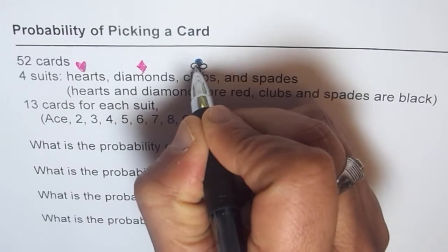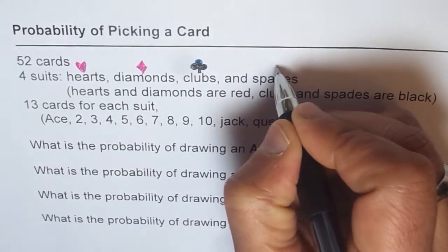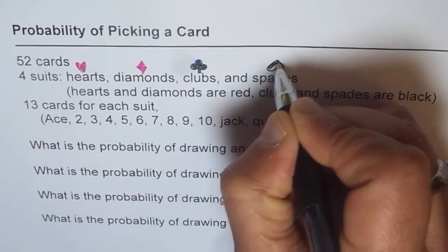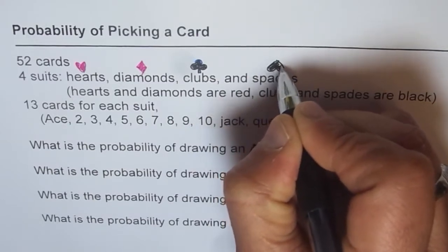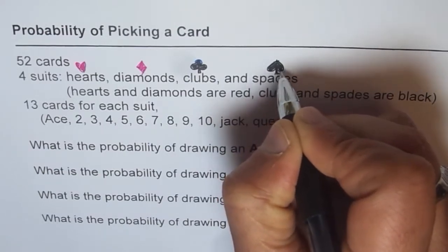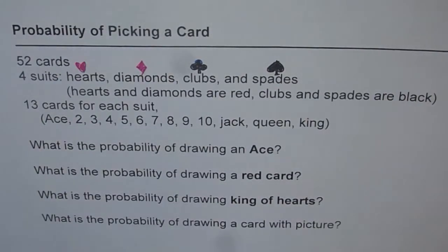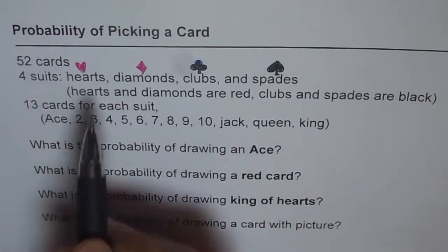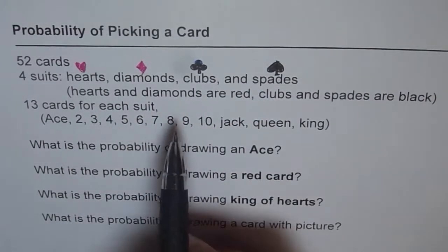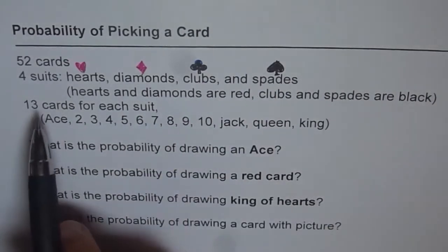Clubs looks like a flower, and spades look like a leaf — similar to a money plant leaf, but in black color. In a deck of 52 cards, there are 13 of each suit: 13 hearts, 13 diamonds, 13 clubs, and 13 spades. Hearts and diamonds are red; clubs and spades are black.